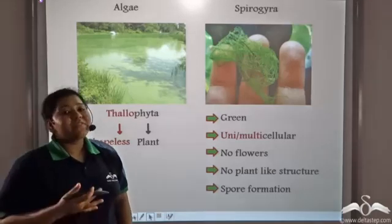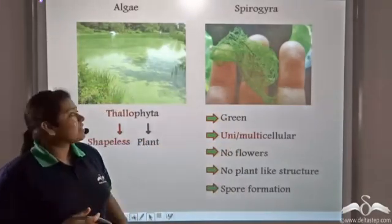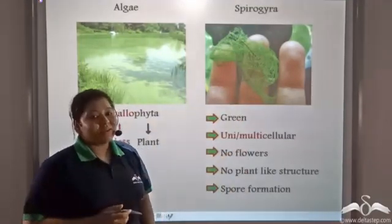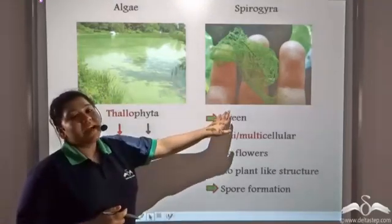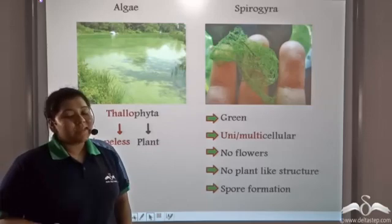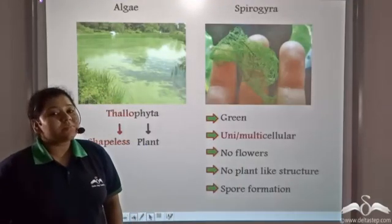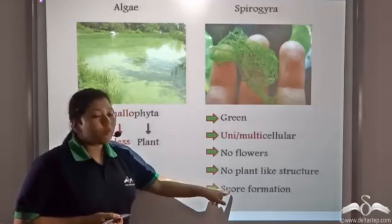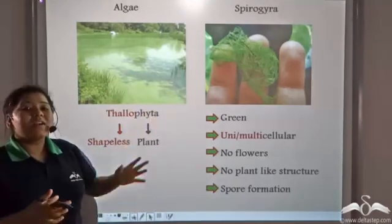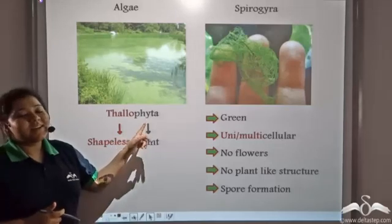These plants have the features of normal plants in that they are green. But unlike plants, algae is unicellular — that is, single-celled — while Spirogyra is multicellular, meaning many-celled. These plants do not have flowers and do not have plant-like structures such as leaves, stems, and roots. Since they do not have flowers, they cannot reproduce sexually. They reproduce with the help of spores. These organisms are grouped under the phylum Thallophyta, where 'thallo' means shapeless and 'phyta' means plant.